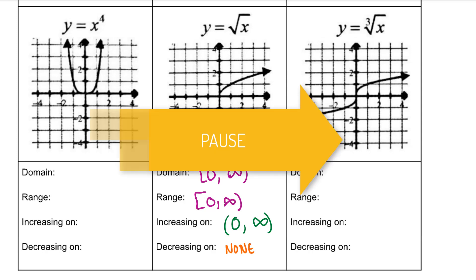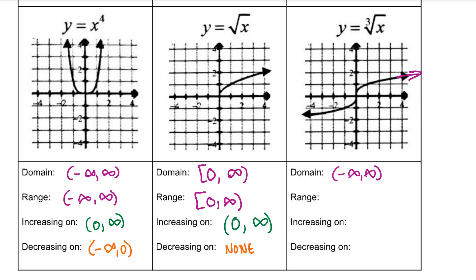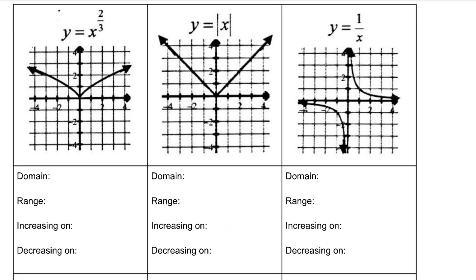Try y = x⁴ and y = ∛x on your own, then press play to check your answers. Even though it's going up ever so slightly, it still goes up toward infinity and down toward negative infinity for the range. Note that y = x^(2/3) and y = |x| are also very similar in characteristics to y = x² and y = x⁴.